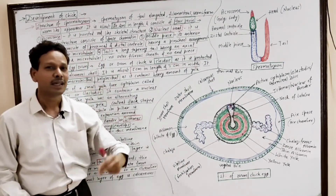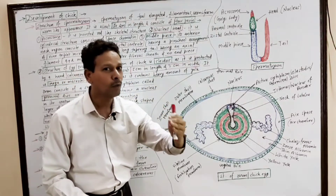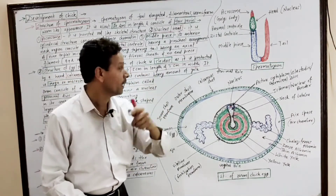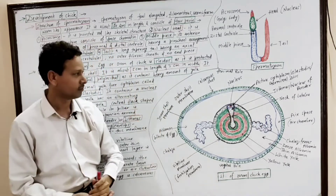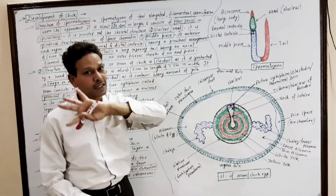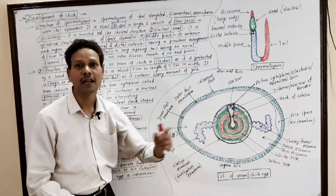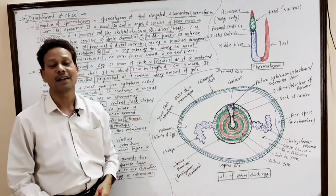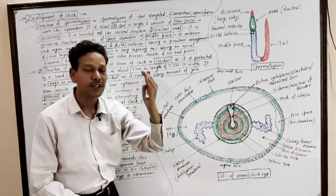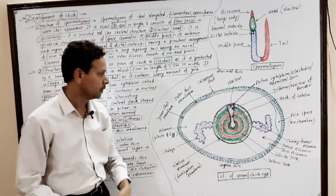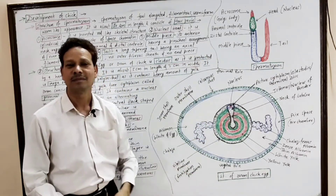The next very important topic is the structure of egg or ovum in case of chick. The egg or ovum is cleidoic — it means the egg is well protected by a hard calcareous shell, made of calcium carbonate. The chick egg is megalecithal, macrolecithal, and telolecithal, as it consists of a heavy amount of yolk. This ovum is about five centimeters in length and three centimeters in width.